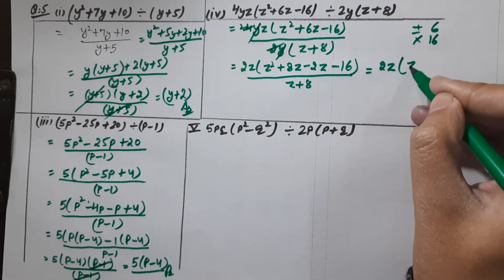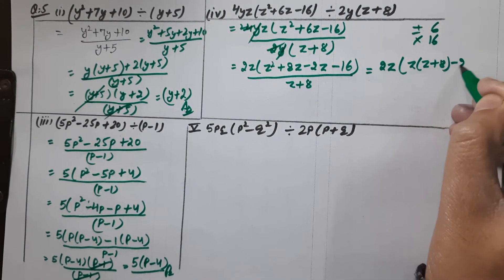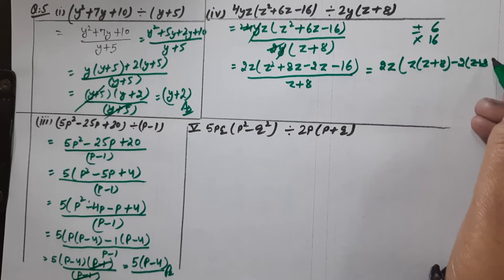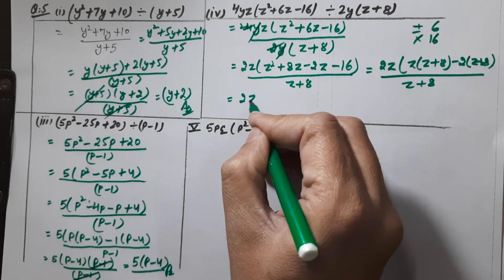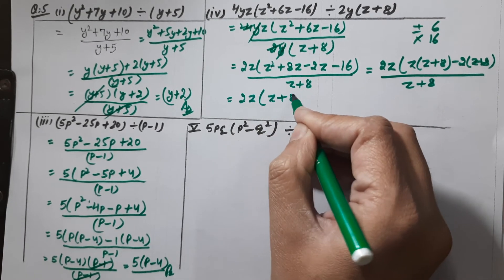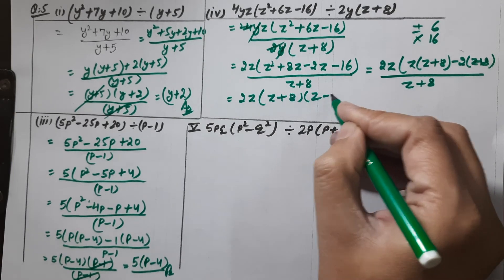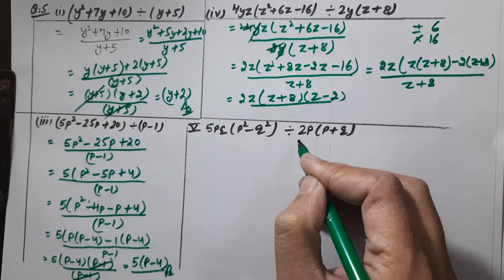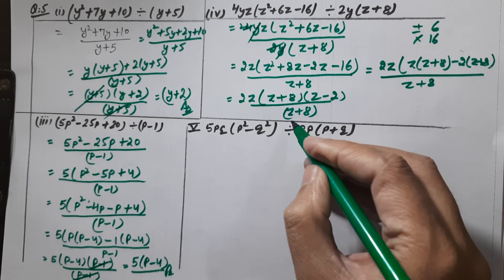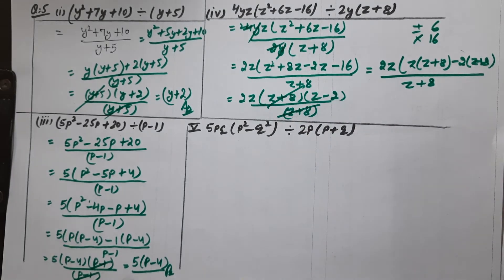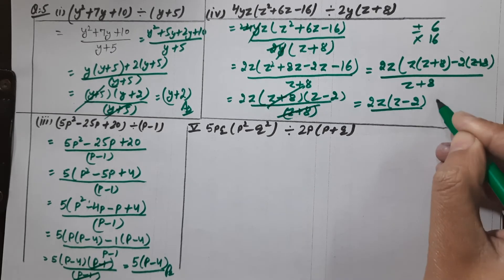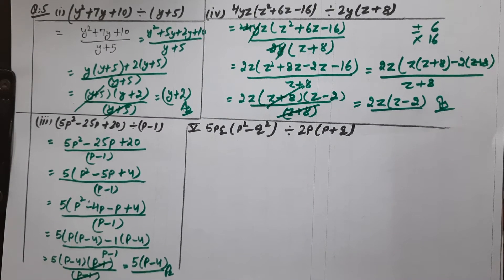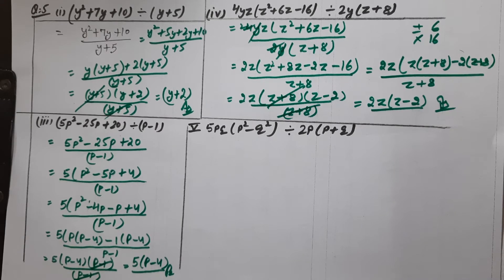Taking common from each group: 2z into z(z plus 8) minus 2(z plus 8), over (z plus 8). Taking (z plus 8) common we are left with (z minus 2). Over (z plus 8), now (z plus 8) with (z plus 8) cancels, so we are left with 2z into (z minus 2), which is our required answer.